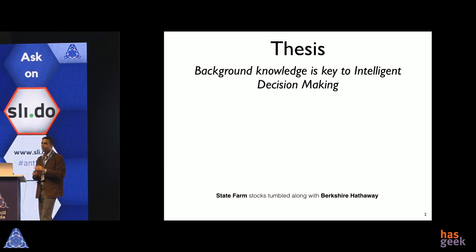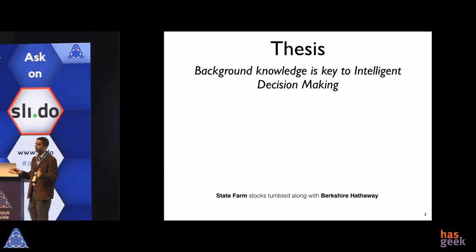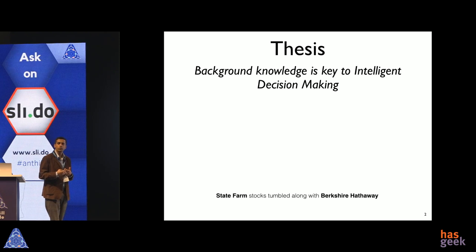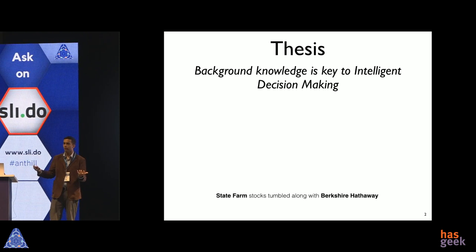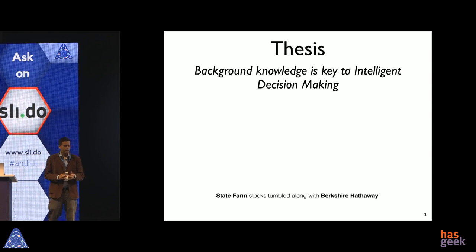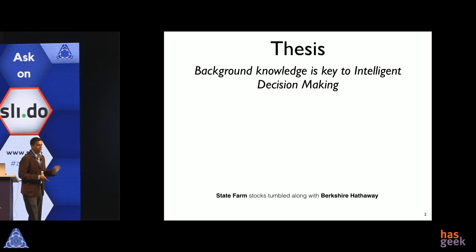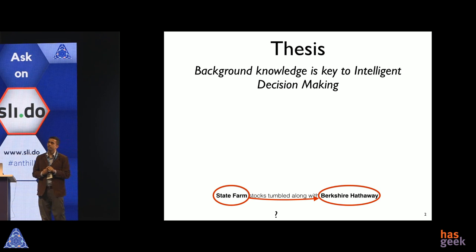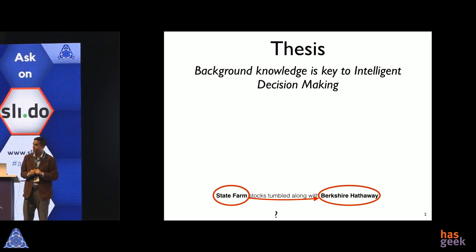That's by design of language — we use language for communication, so we only convey things we think the recipient doesn't already know about. Otherwise it would be very redundant. Even if you have all of that background knowledge, why there might be a correlation between the stock prices of these two companies is not immediately clear.